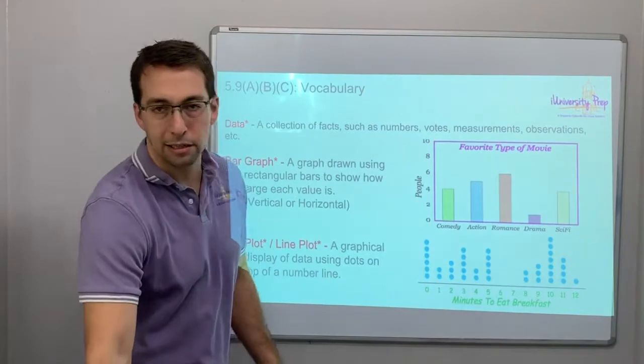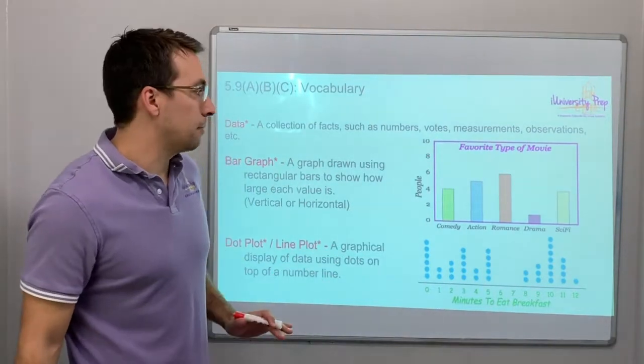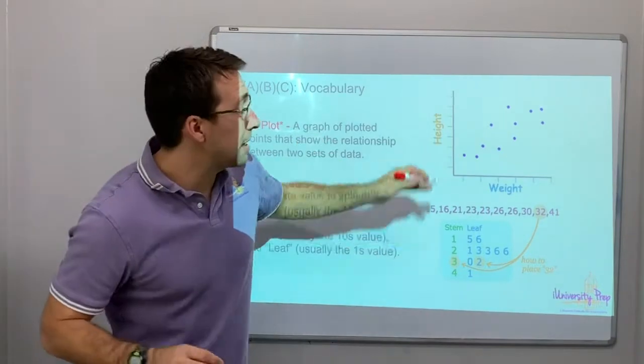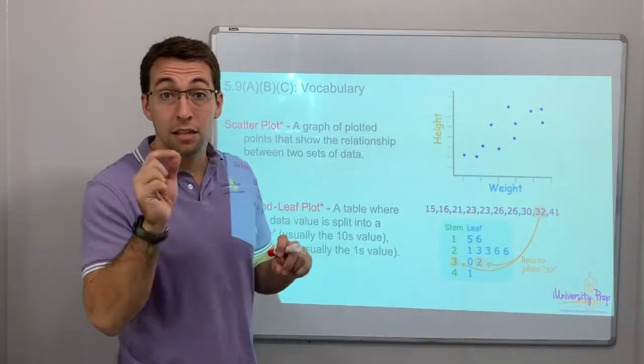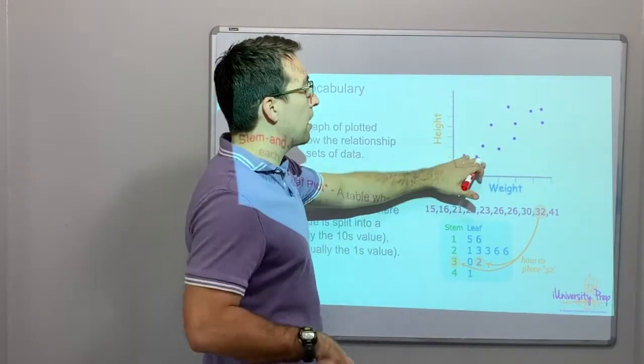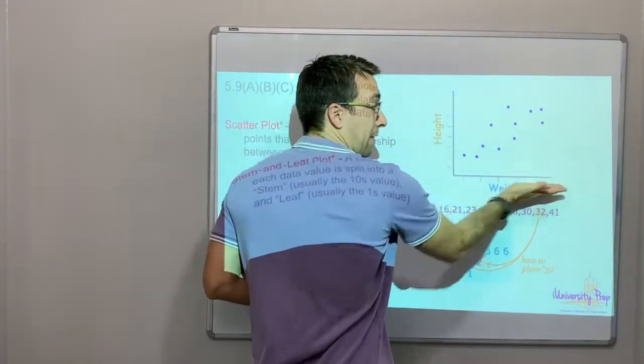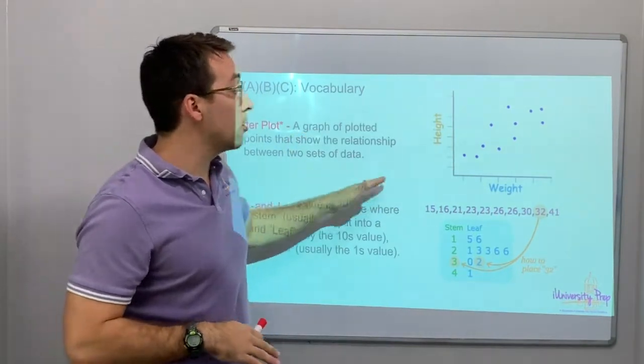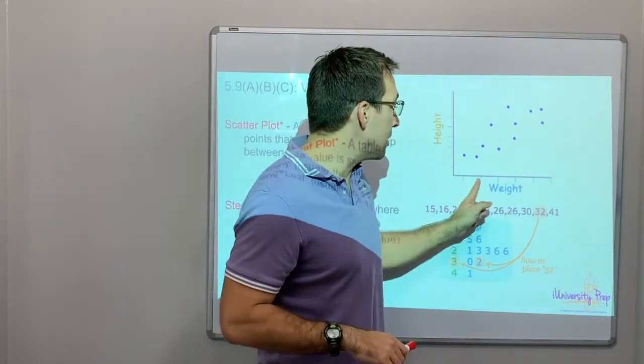Scatter plot is discrete because there's no line connecting the dots. Each dot is independent. And the scatter plot is going to compare the x-value to the y-value. Scatter plot shows you trends. Notice that as you gain weight, as you get bigger in weight, you get taller in height. So it shows you a trend, a general trend.